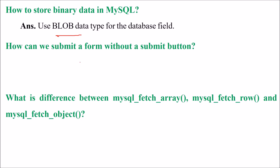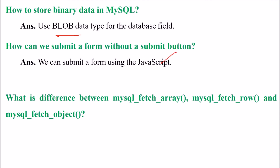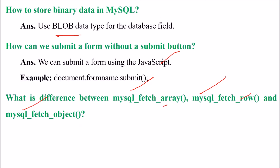How can we submit a form without a submit button? You can use JavaScript for that. For example: document.formname.submit() — you can write this in JavaScript. What is the difference between mysql_fetch_array, mysql_fetch_row, and mysql_fetch_object? As the names suggest, they are for fetching as an array, fetching a row, and fetching an object.